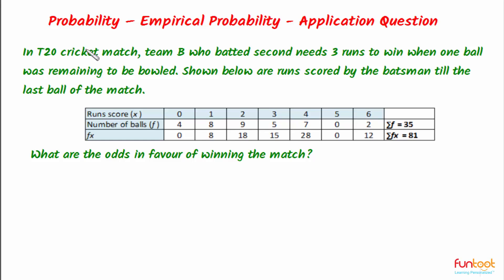In a T20 cricket match, team B who batted second needs three runs to win when one ball was remaining to be played. Shown below is the data about runs scored by the batsmen till the last ball of the match. In the first row we have runs scored, and in the second row we have number of balls.